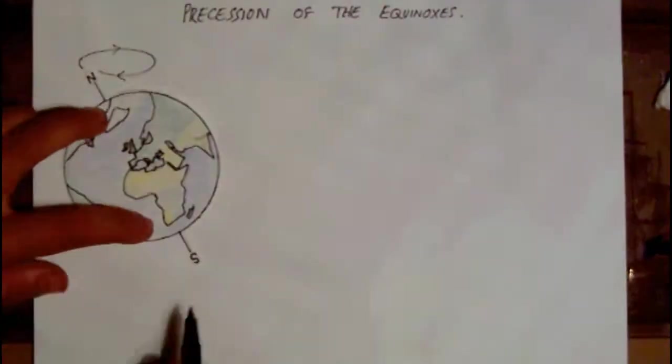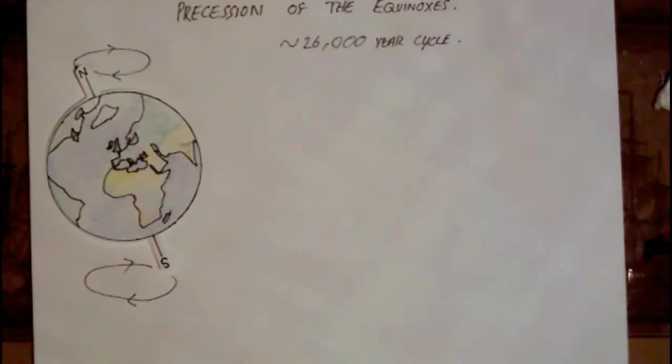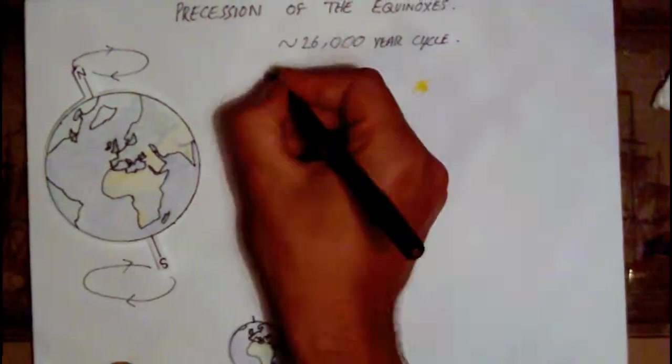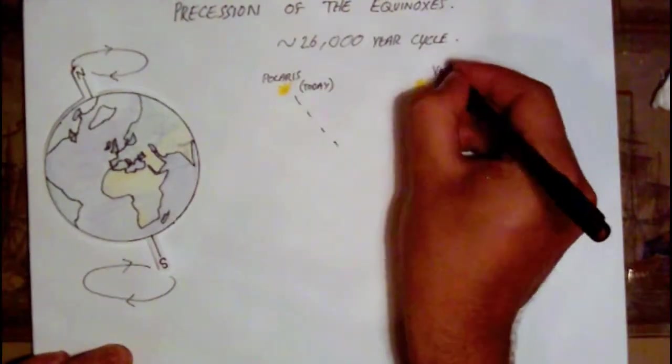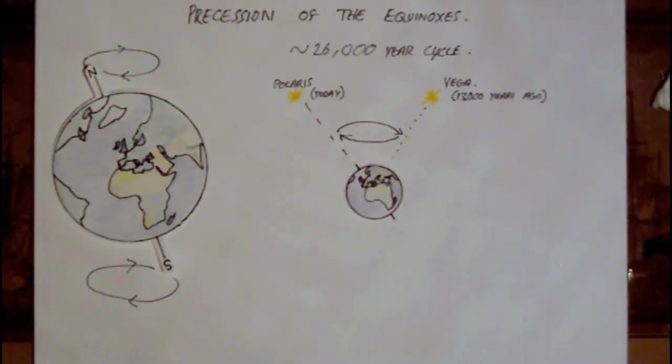The last of these cycles is the precession of the equinoxes. If you've ever played with a spinning top, you'll be familiar with the mechanism. As the top, or planet, spins on its axis, it wobbles, the poles describing a circular motion through the sky relative to the fixed canvas of the stars. This cycle takes about 26,000 years.